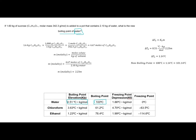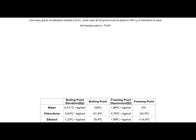Let's work a problem where we're going to depress the freezing point. How many grams of methylene chloride must be added to 350 grams of chloroform to lower the freezing point to negative 75 degrees Celsius? In this case, we know our new freezing point, so we need to figure out the concentration. Looking at our table for chloroform, we use the freezing point depression constant, and the freezing point of our pure solvent is negative 63.5 degrees Celsius. Our change in freezing point is the original minus the new, so the freezing point changed by 11.5 degrees Celsius.